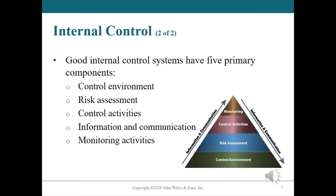A good internal control system has the following five primary components: one, control environment; two, risk assessment; three, control activities; four, information and communication; and five, monitoring activities.